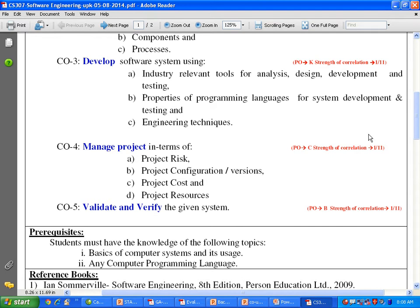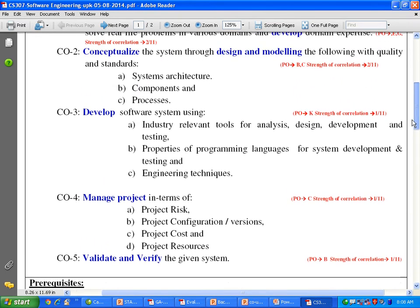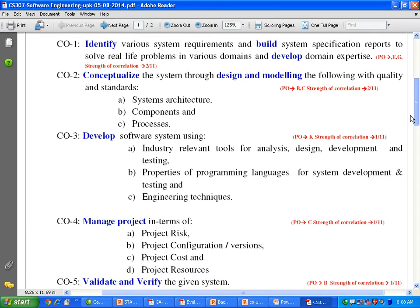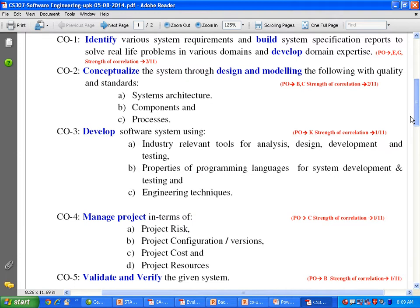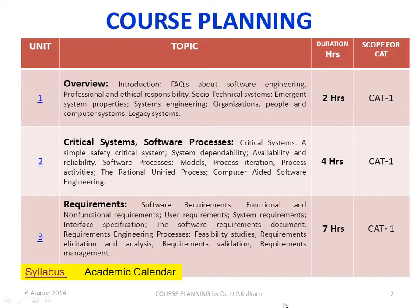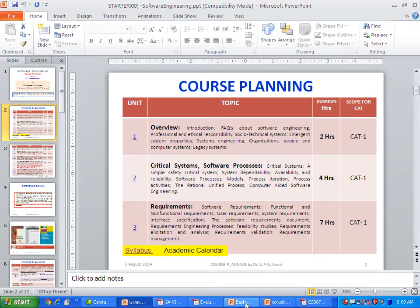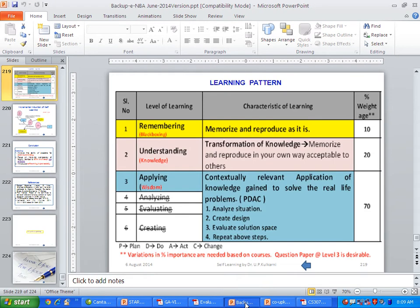The last course outcome is to validate and verify the given system. This is how we write course outcomes — all these course outcomes are measurable. We have to set questions in the question paper based on these outcomes, and when writing them we need to look into different levels of learning.